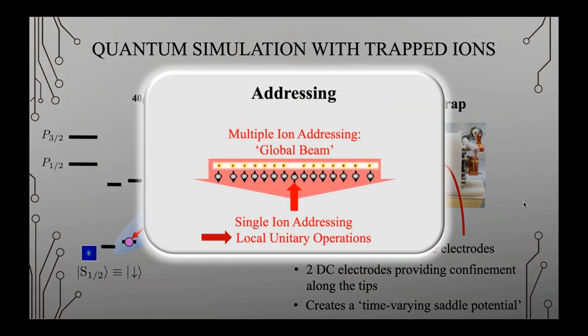We address the ions using a 729 nanometer laser split into several different paths. We have a very broad beam called the global beam, which addresses all the ions at the same time and performs the same operation on them. We also have a single-ion addressing beam, which is very narrow and addresses only one ion at a time. So if you have a chain of 20 ions all in the ground state and you want to put ion 7 into the excited state, you can address it with the addressing beam — it's a really powerful tool.